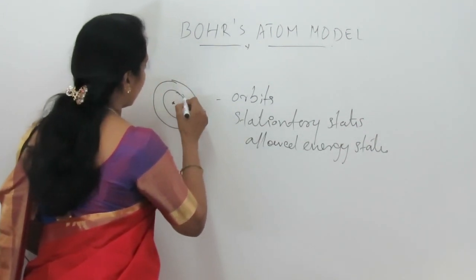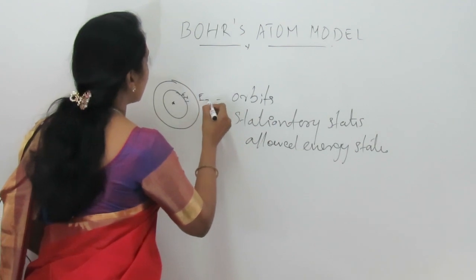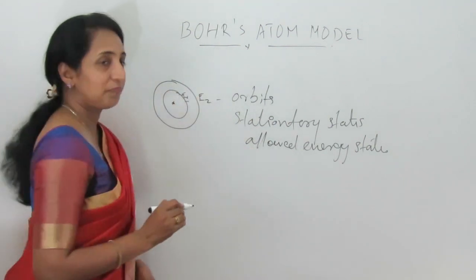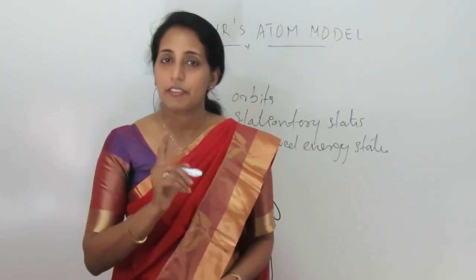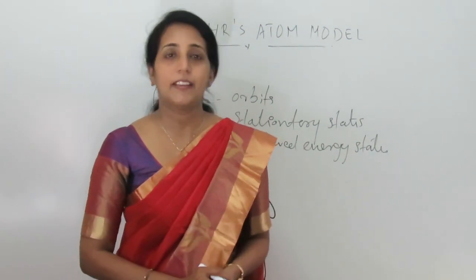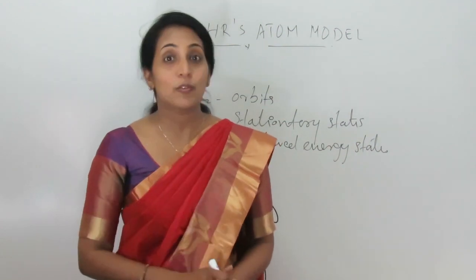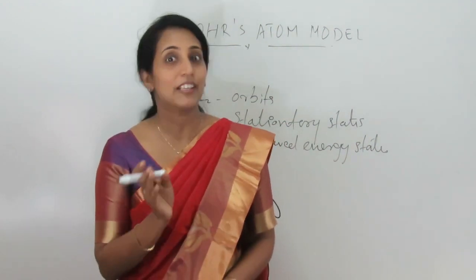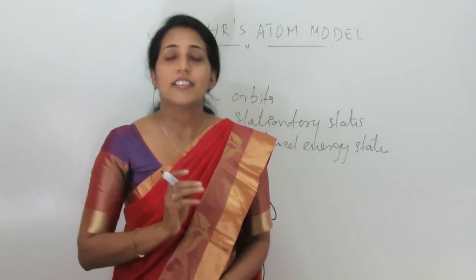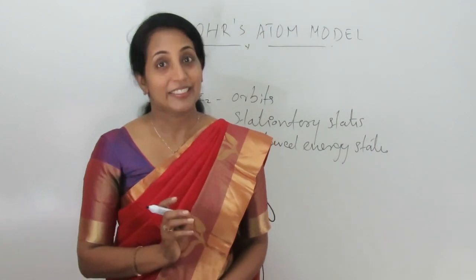The energy of the first orbit is E1 and the energy of the second orbit is E2. That is the first postulate. The second postulate was that the energy of the electron does not change with time.